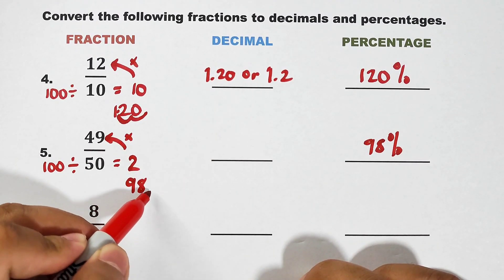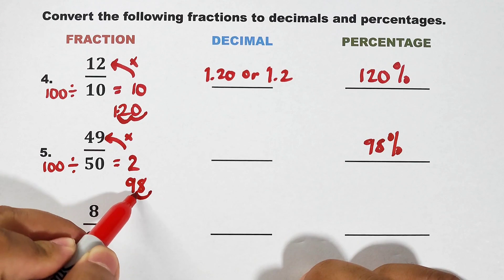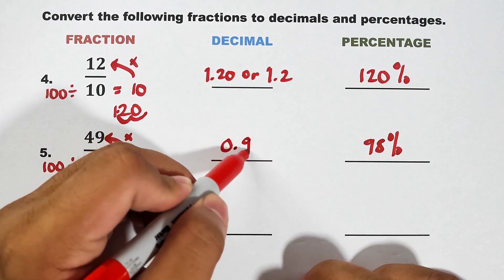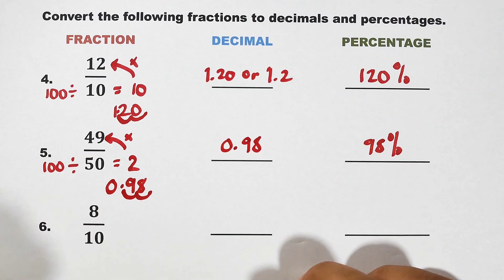Now, for the decimal, from this point, 1 and 2. So you have 0.98 as an answer. Okay?